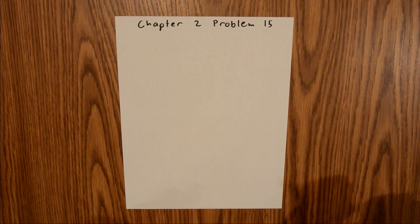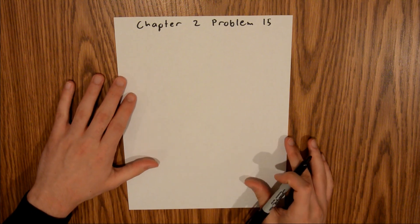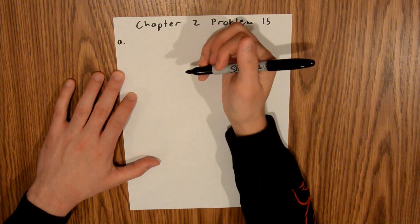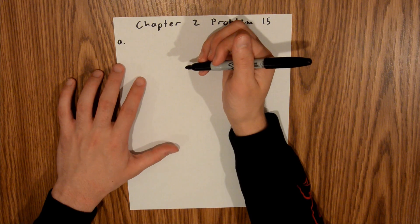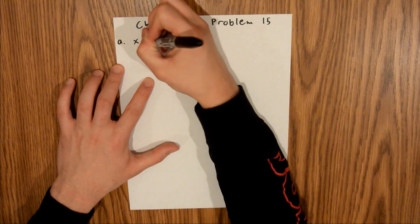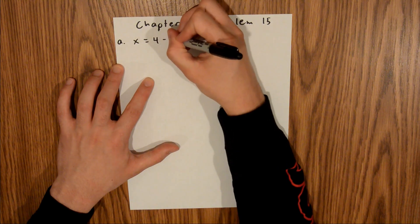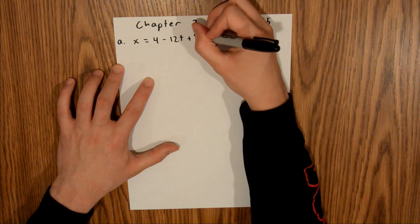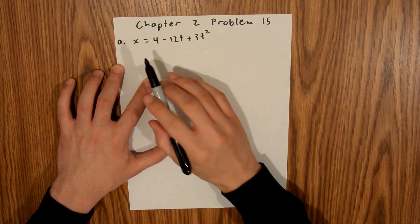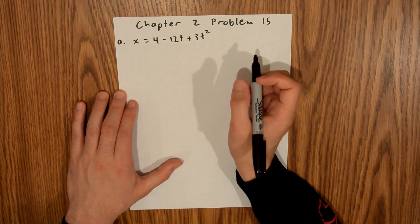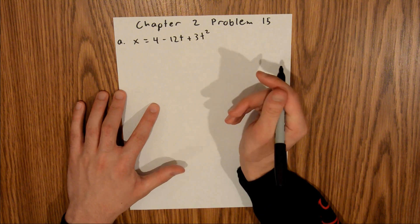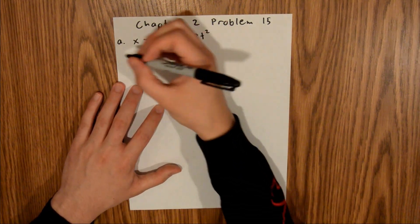Chapter 2 is all about motion along a straight line, and in Problem 15, we're talking about a particle and asked a series of questions about its position, velocity, and speed. For part A, we're given the position equation for the particle, which is x equals 4 minus 12t plus 3t squared, where x is in meters and t is time in seconds, and we're asked to find the velocity at t equals 1 second.